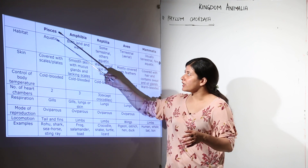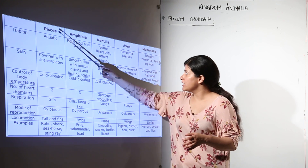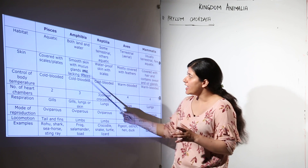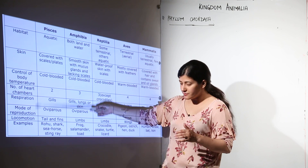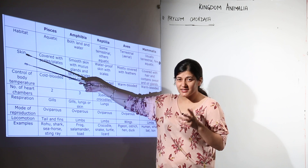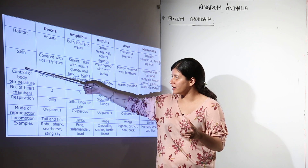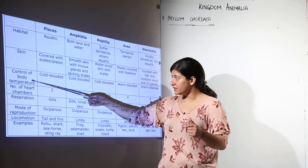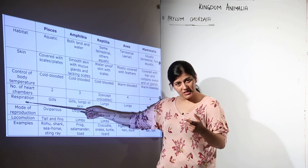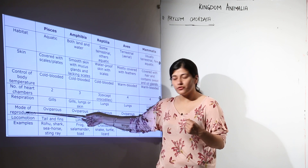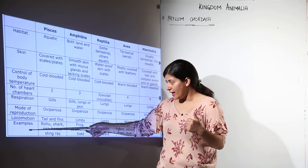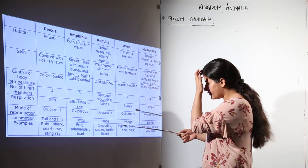The classes we are going to cover are Pisces, Amphibia, Reptilia, Aves, and Mammalia. The terms we need to remember are: first, the habitat where they are located; their skin and any specific characteristics; whether they are warm-blooded or cold-blooded; their heart chambers and how many there are; how respiration takes place; the mode of reproduction; how they perform locomotion; and the examples we have to study.